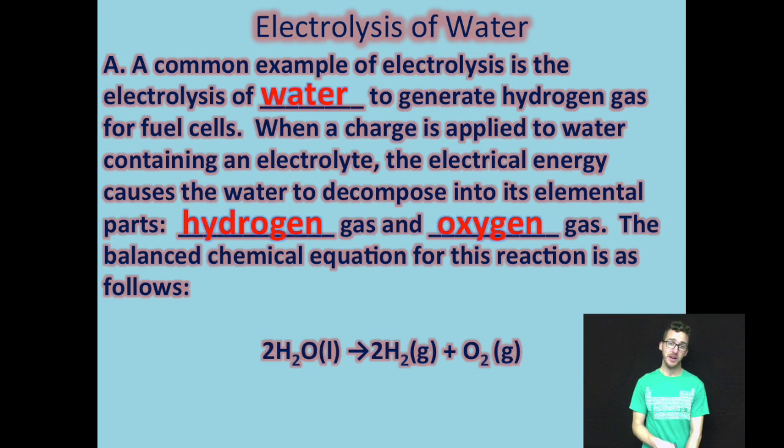That hydrogen gas that's generated can then be used as a fuel source in fuel cells. Now, you're given the balanced chemical equation for the reaction: 2H₂O(l) → 2H₂(g) + O₂(g). Important note that relationship between your products, you're always going to generate twice the amount of hydrogen as oxygen in this electrolysis of water when you split water apart.